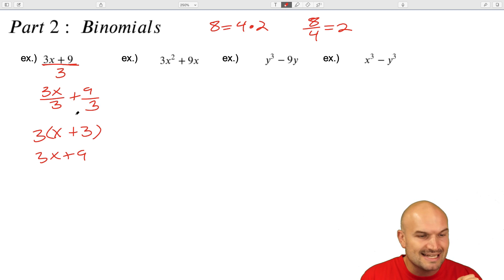So when you want to factor a binomial, the best thing you can do is find a common factor of both of those terms. So the common factor of 3x and nine was just the number three, and you divide both of the terms by that common factor.